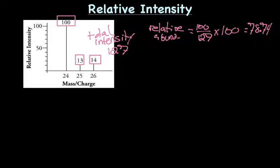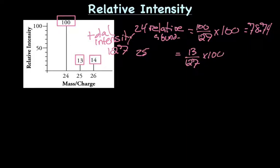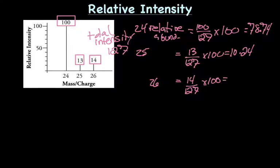I'm rounding to two decimal places since I don't know the exact sig figs. The relative abundance for the isotope with a mass of 24 is 78.74. For the isotope with a mass of 25: 13 ÷ 127 × 100 = 10.24. And the relative abundance of the isotope with a mass of 26 is 14 ÷ 127 × 100 = 11.02. Now we have our relative abundances and we can figure out the average atomic mass.